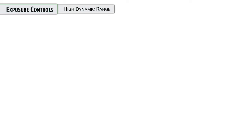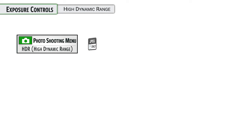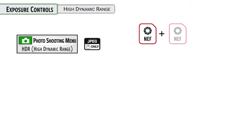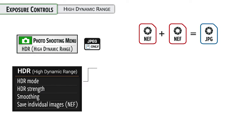Next up is high dynamic range. High dynamic range is kind of like active de-lighting, but instead of processing a single file, it shoots two individual photos and combines that information to create a JPEG image.